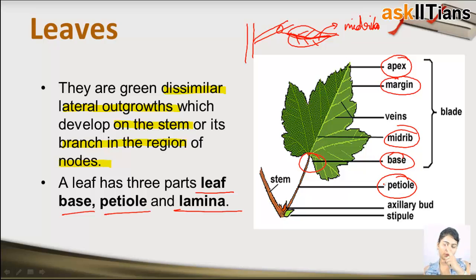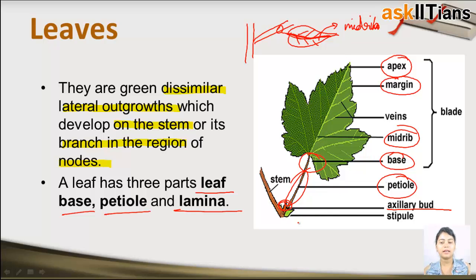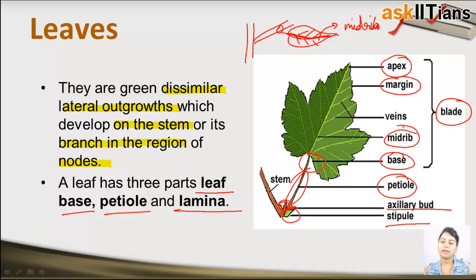The part which connects the leaf to the stem is known as the petiole. There is also an axillary bud and a greenish stipule. The complete portion from apex to base is known as the blade.